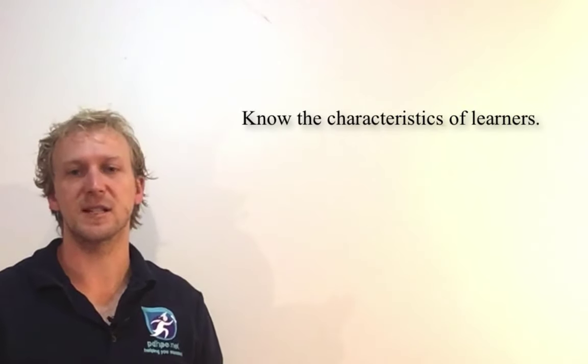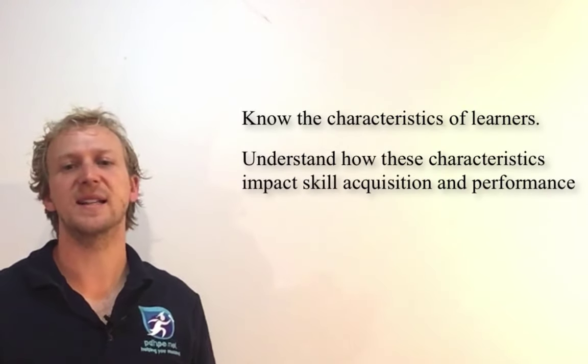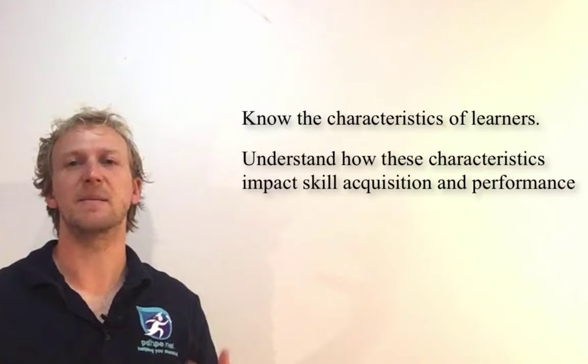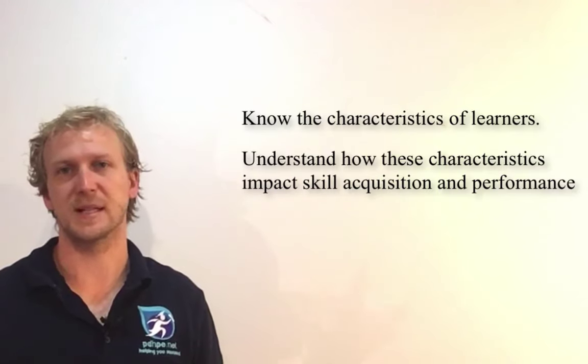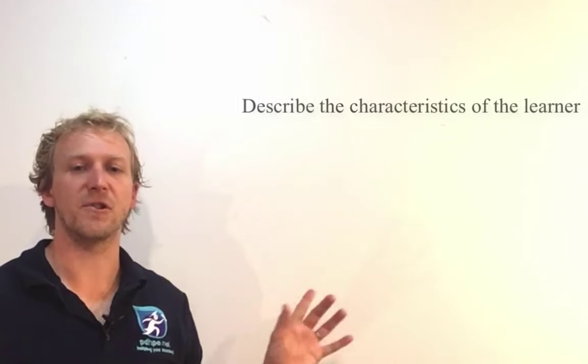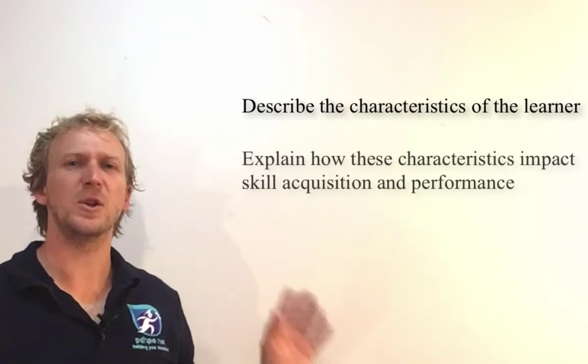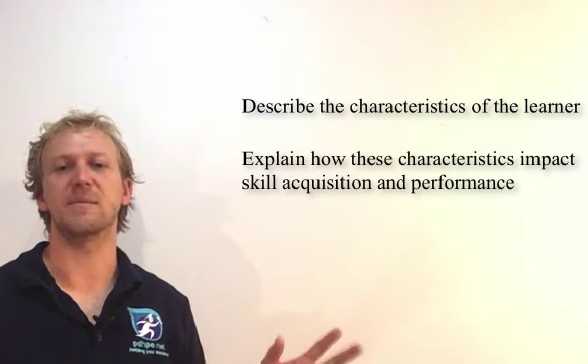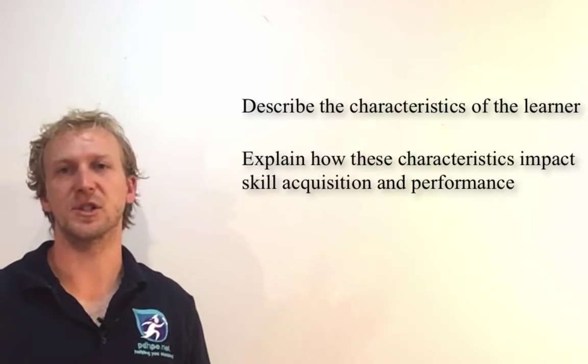Looking at this singular dot point, our smaller sub-goals are for you to know the characteristics of the learner and understand how these characteristics impact skill acquisition and performance. The success criteria for these smaller learning goals are to describe the characteristics of the learner and explain how those characteristics impact skill acquisition and performance.